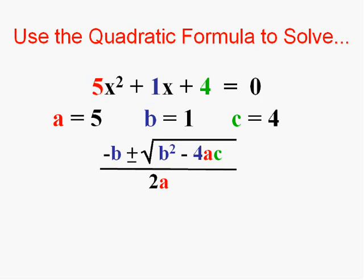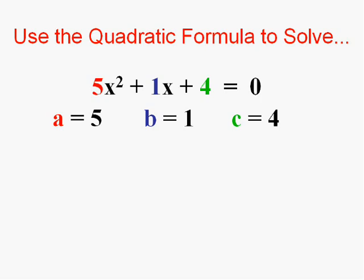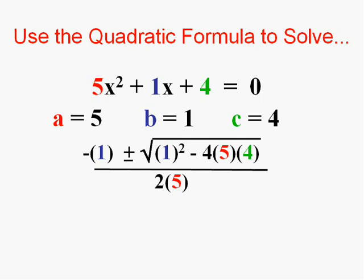So we call on the quadratic formula because we can't factor, replacing each of the letters with the appropriate value. Then all we have to do is simplify and we get the answers. Negative 1 plus the square root of negative 79 over 10 and negative 1 minus the square root of 79 over 10.